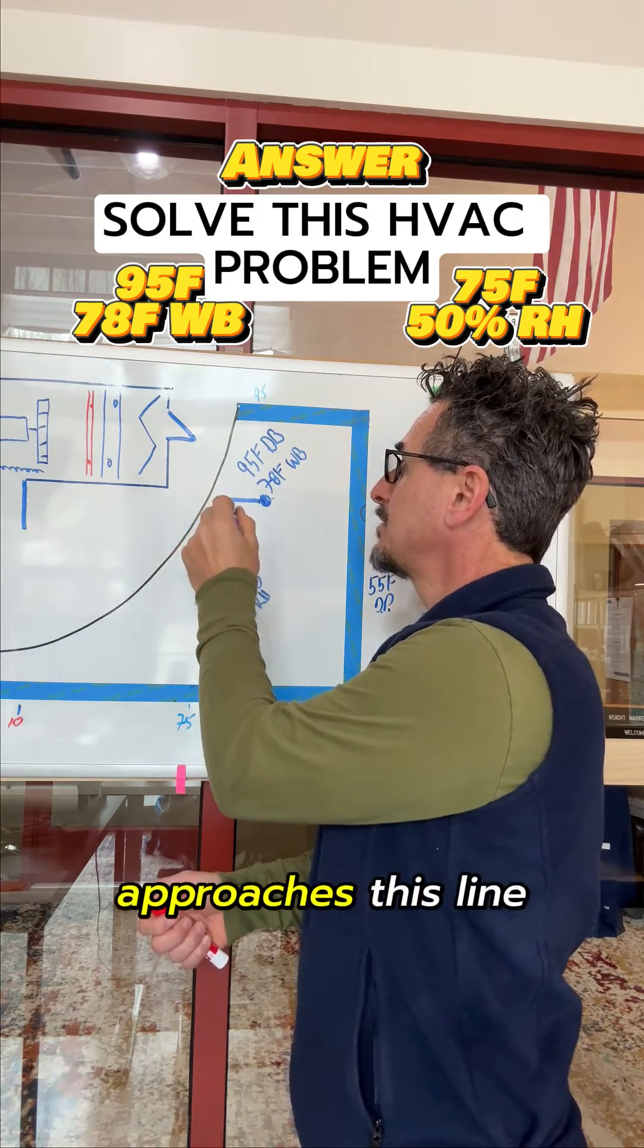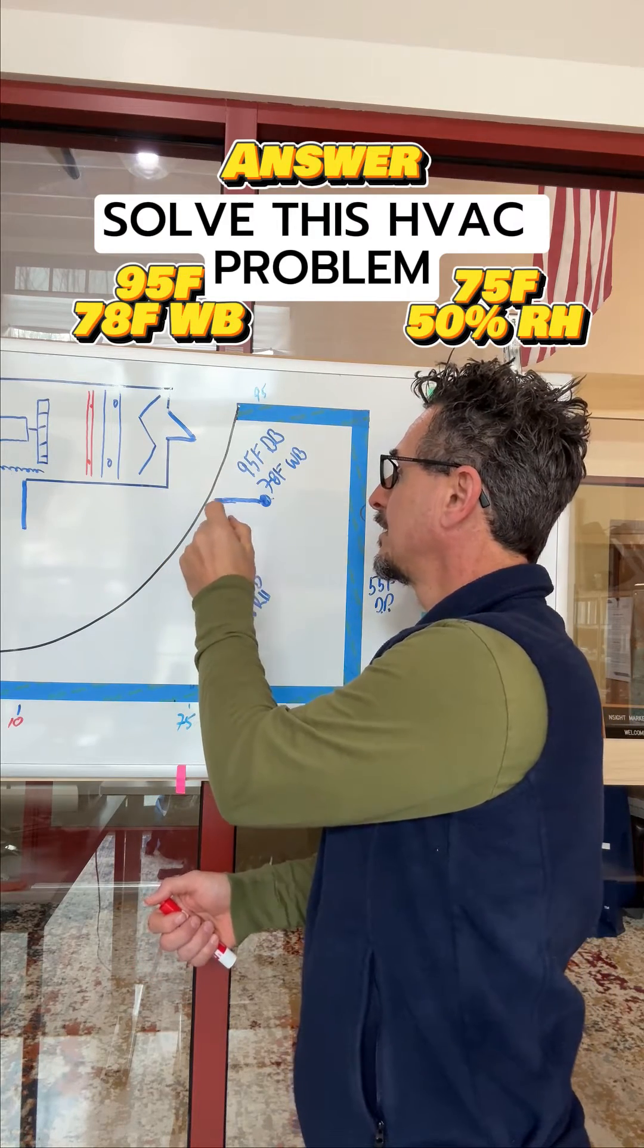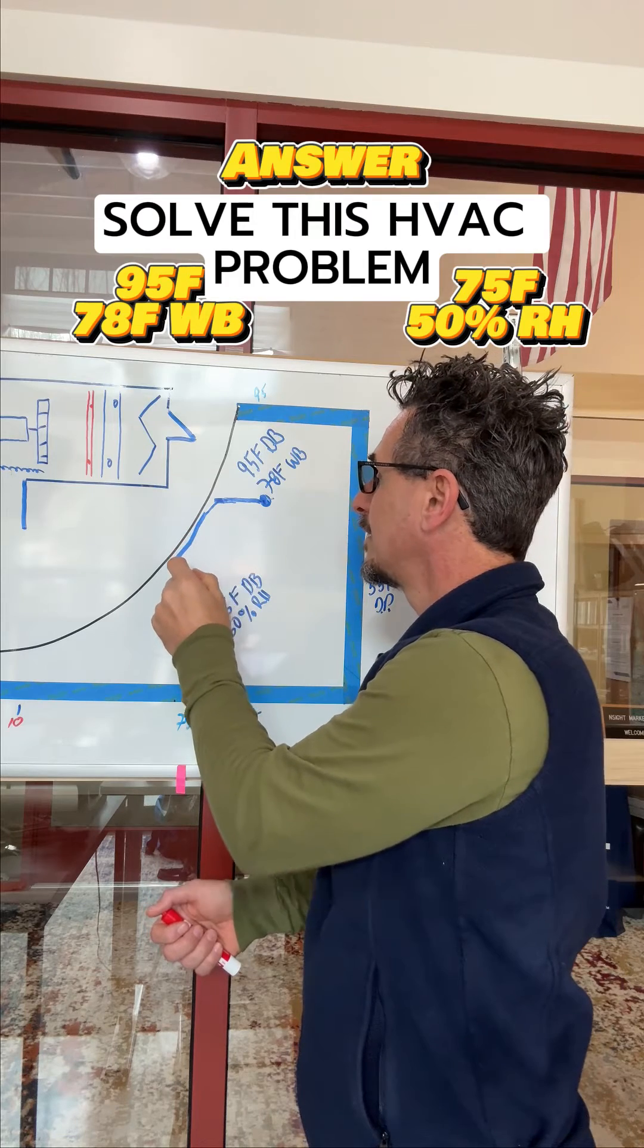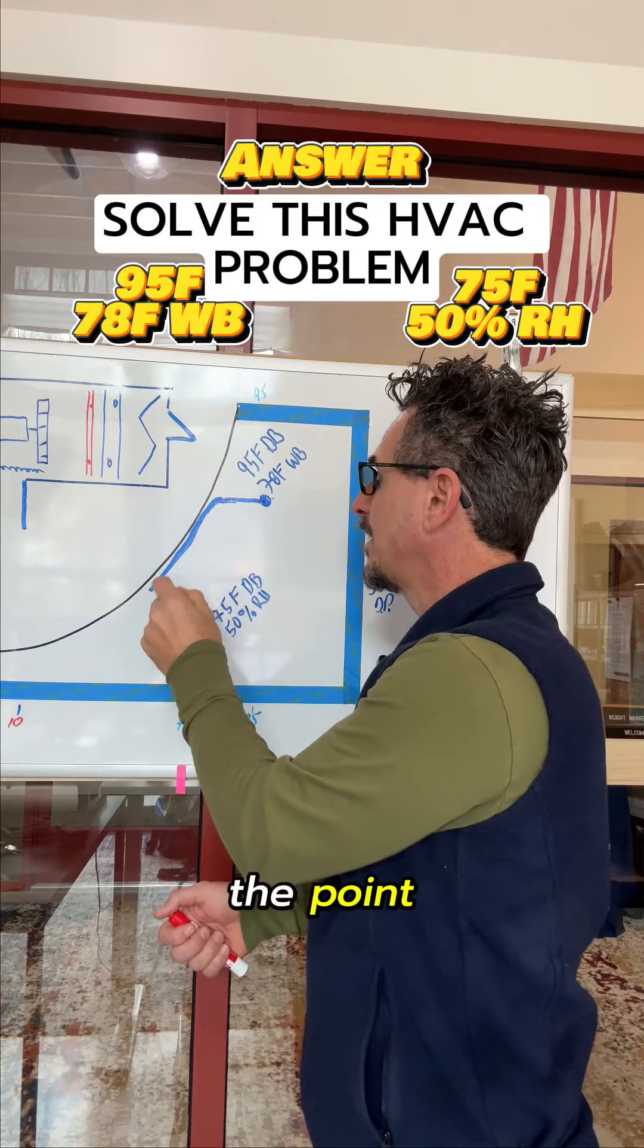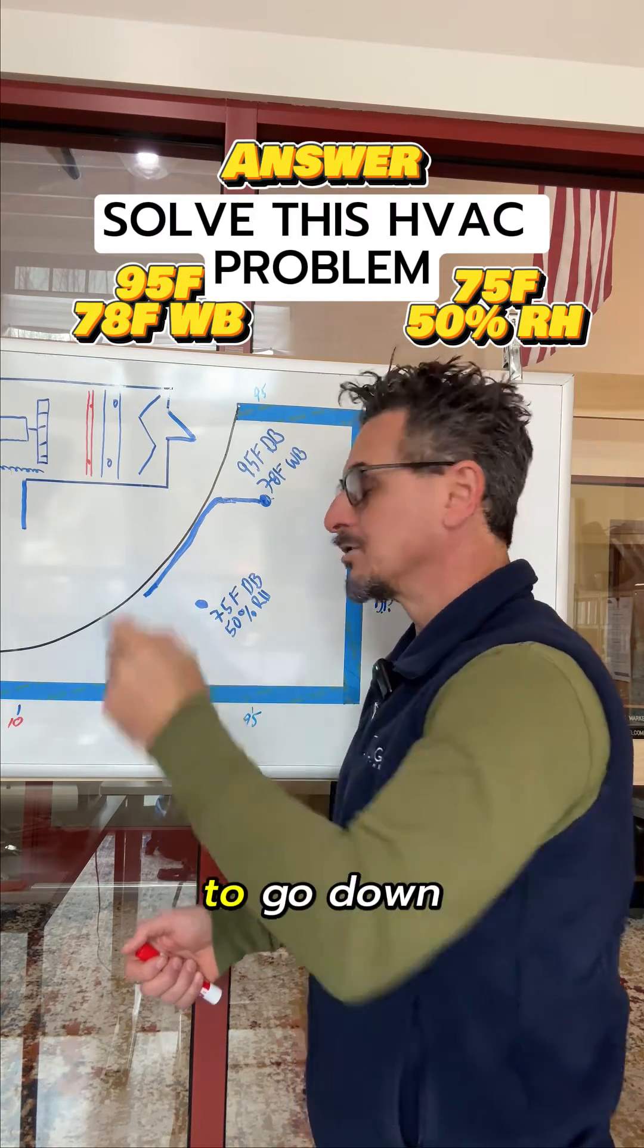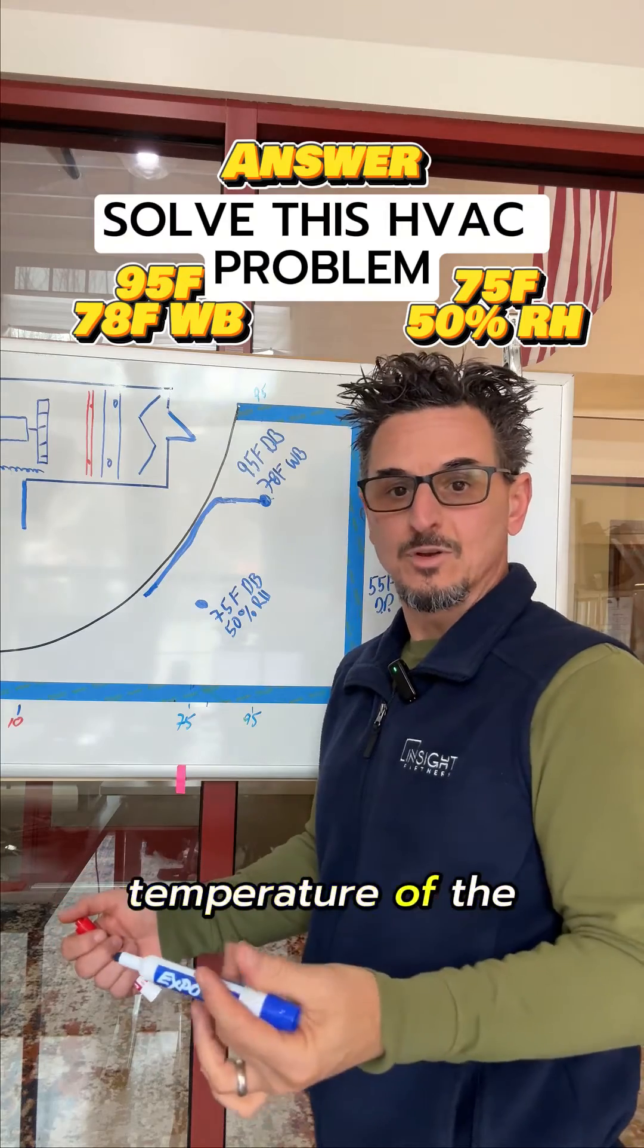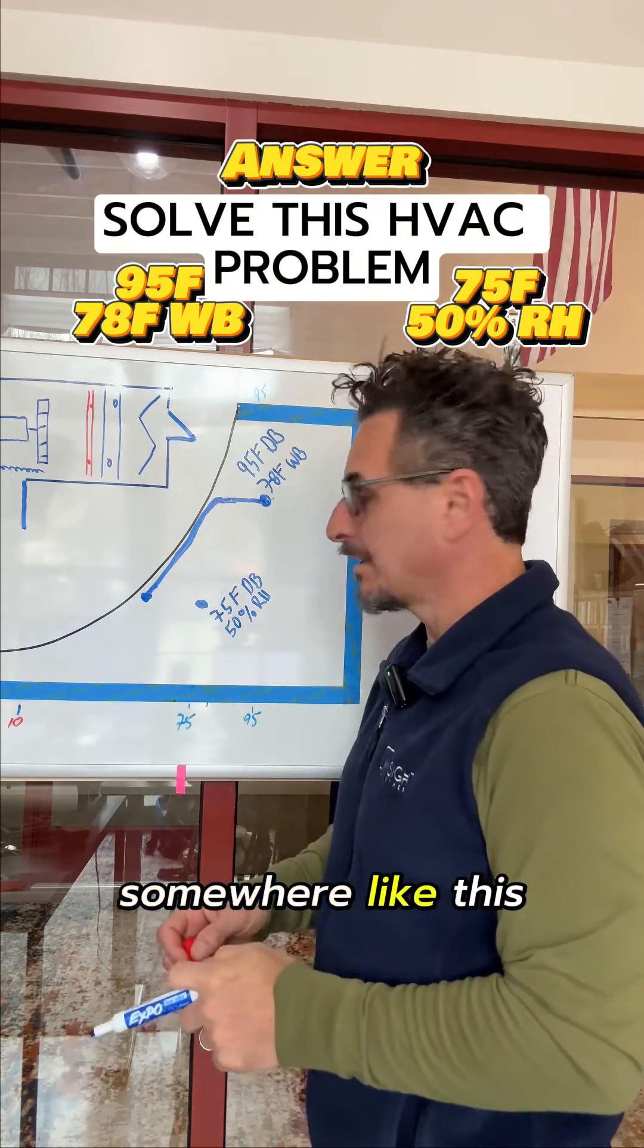Then when it approaches this line here, which is your 100% saturation line, it starts to curve down and kind of follows that line down. Not a very pretty curve, but you get the point. It follows it down to wherever it's able to go depending on the temperature of the coil, and you would leave the cooling coil somewhere like this.